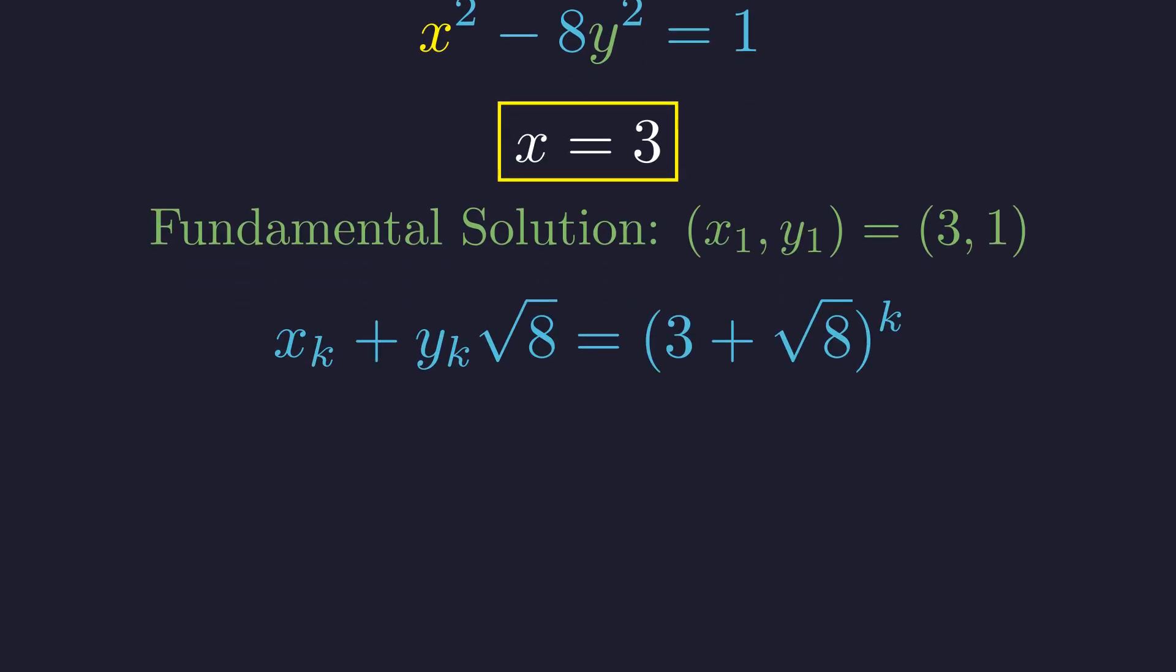Here's the beautiful key insight. All solutions, x sub k, y sub k, are generated by taking integer powers of the expression 3 plus the square root of 8. This single formula unlocks everything.